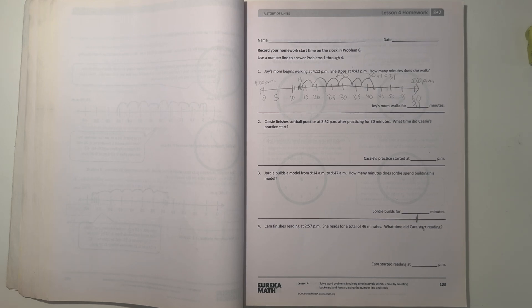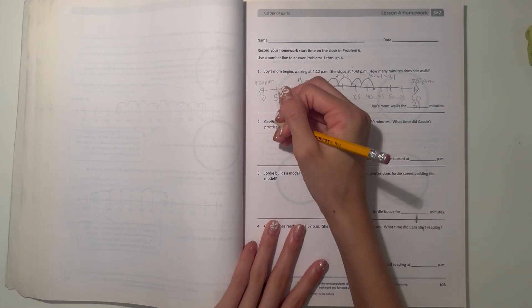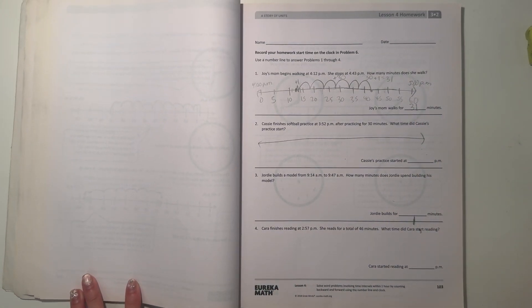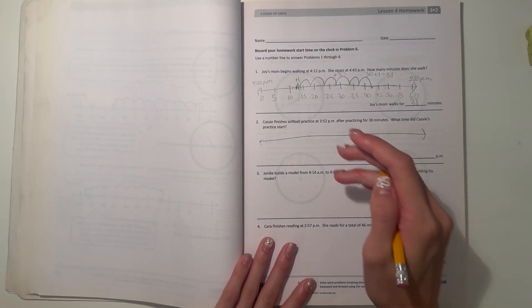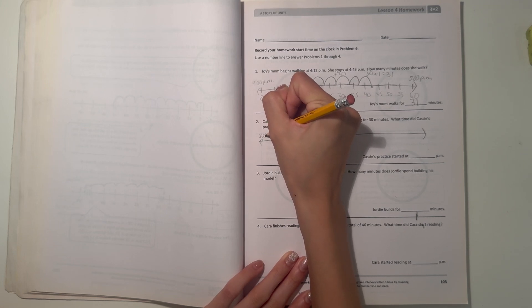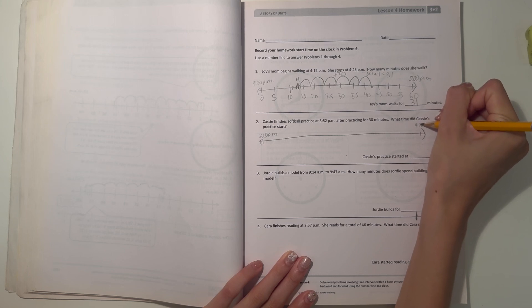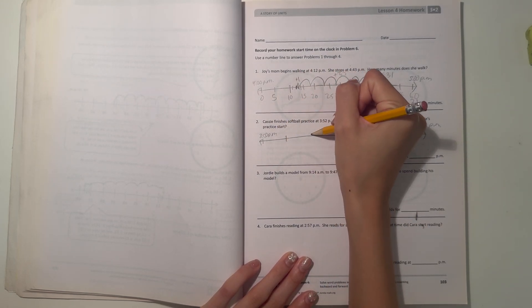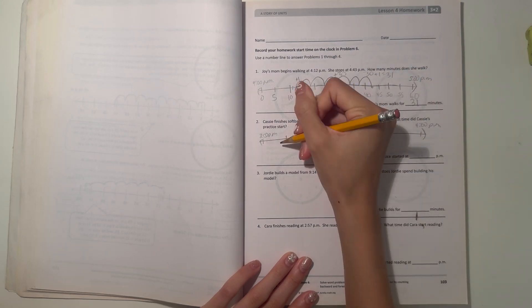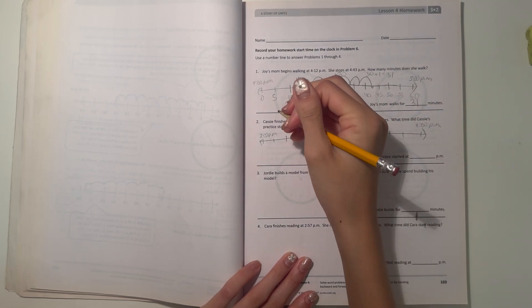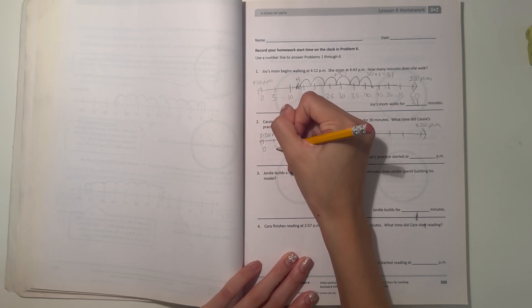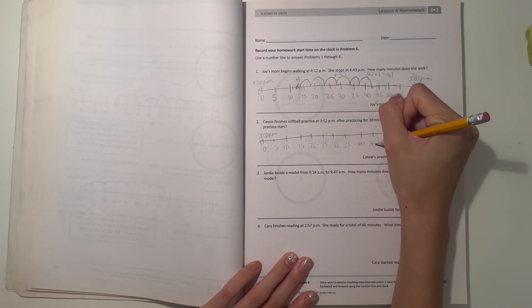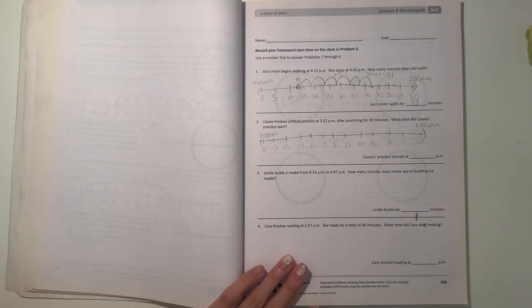Number two: Cassie finishes softball practice at 3:52 after practicing for 30 minutes. What time did Cassie's practice start? So 3 o'clock right here and this will be 4. Let's draw our number line: 10, 20, 30, 40, 50. Let's label that: 5, 10, 15, 20.